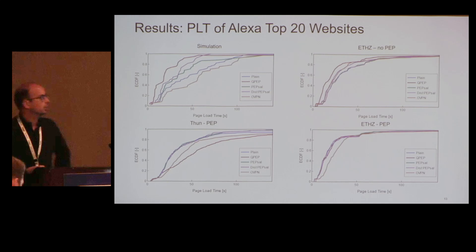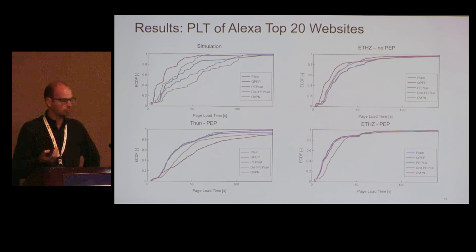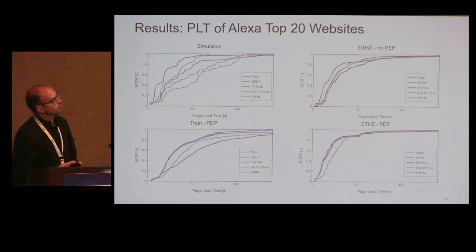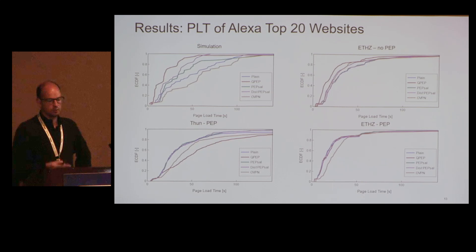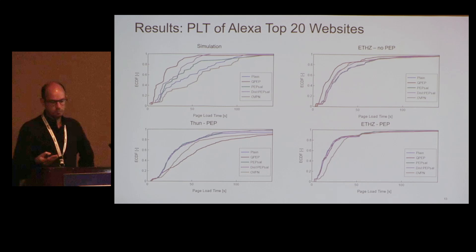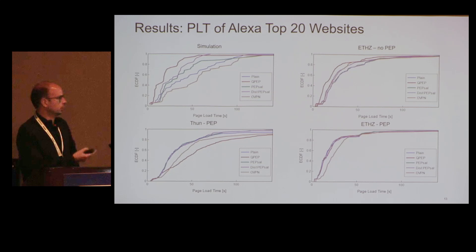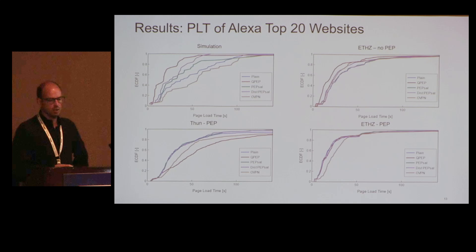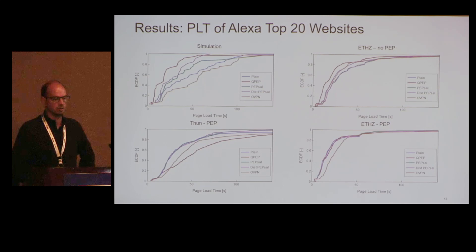For page load times, it's not as bad. In the simulation QPAP did quite well compared to all other options, and OpenVPN was the worst. On the right, QPAP actually does best when there's no PEP, though the difference isn't as large as in the simulation — they all cluster more or less together. With the PEP activated, OpenVPN is the worst, and all encrypted versions don't work well. We also tried random websites that nobody uses to check for caching effects, but that made no difference.